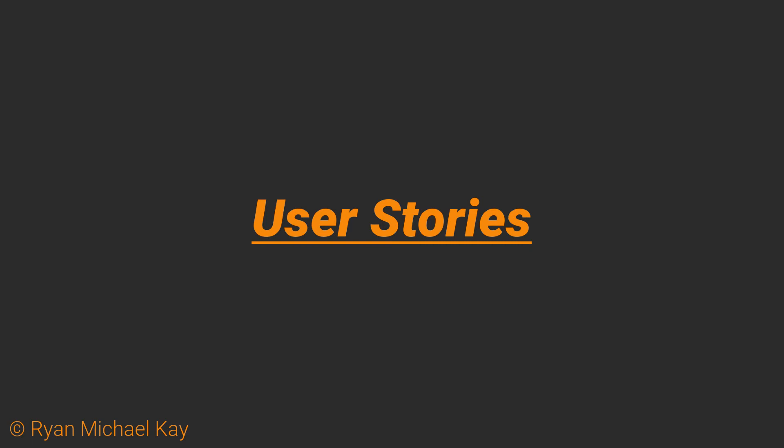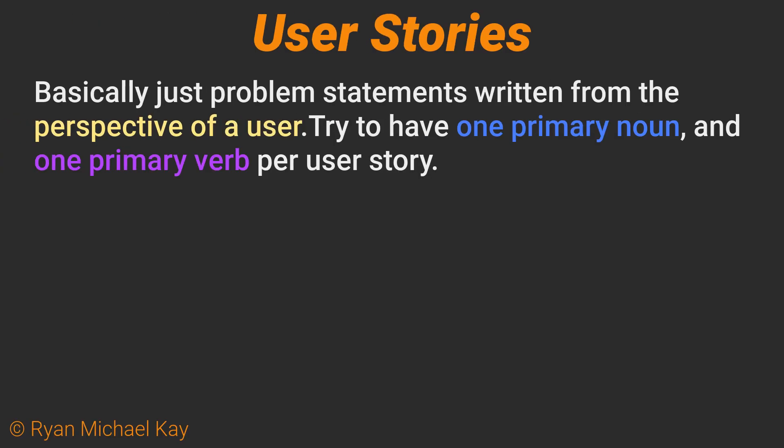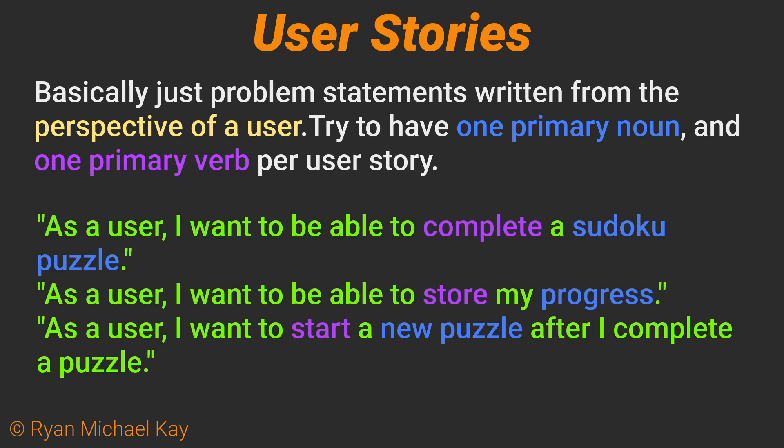Another approach which is very common among software professionals is to create what are called user stories. User stories are essentially problem statements, but you write them from the perspective of your users. It is important to apply separation of concerns with each story. Each story should concern one primary noun and one primary verb. To take the Sudoku app as an example: as a user, I want to be able to complete a Sudoku puzzle. As a user, I want to be able to store my progress. As a user, I want to start a new puzzle after I complete a puzzle. Afterwards, you will follow a similar process of considering the nouns and verbs.